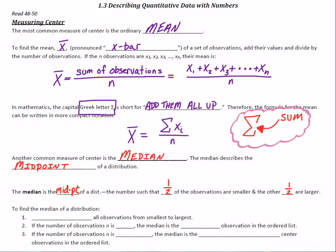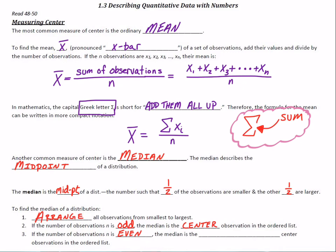To find the median, you'd have to look at all the observations from smallest to largest — go ahead and arrange those observations from smallest to largest. Then, if you have an odd number of observations, the median is literally just the middle number, the center observation. But if you have an even number of observations, there are going to be two numbers in the middle, and you take the average of those two center observations.